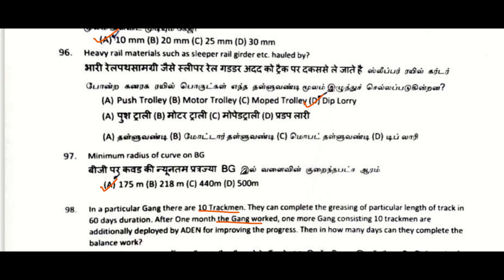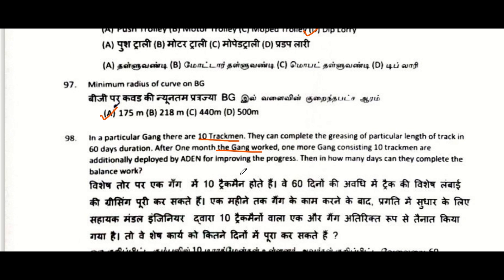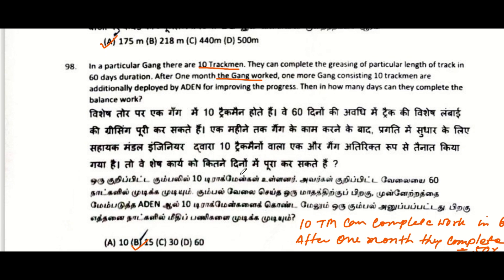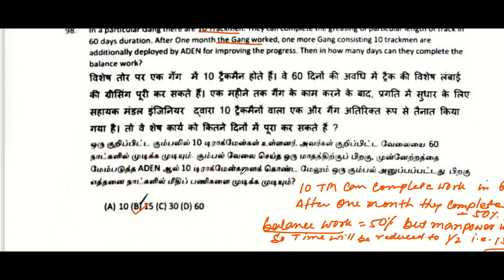Heavy rail materials such as sleeper rail girders are hauled by deep lorry. Minimum radius of curve on BG: 175 meters. In a particular gang of 10 trackmen completing greasing of a track length in 60 days — after one month another gang of 10 trackmen is deployed. The work is 50% complete and manpower has doubled, so the balance work will be completed in 15 days.